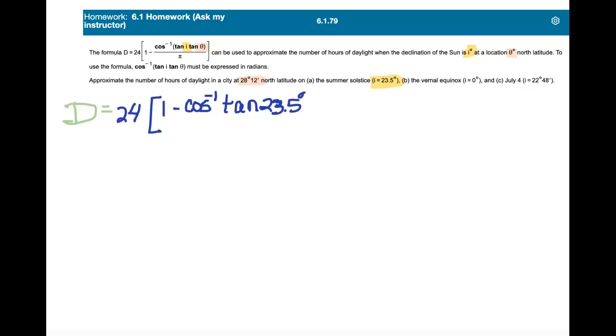and then that's multiplied times the tangent of theta, and theta for all three of these problems is 28 degrees 12 minutes, and we're going to take that numerator and divide it by pi.